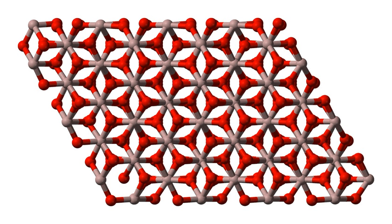Properties: Aluminium oxide is an electrical insulator but has a relatively high thermal conductivity for a ceramic material. It is insoluble in water. In its most commonly occurring crystalline form called corundum or alpha-aluminium oxide, its hardness makes it suitable as an abrasive and as a component in cutting tools. Aluminium oxide is responsible for the resistance of metallic aluminium to weathering, as a thin passivation layer of aluminium oxide forms on any exposed aluminium surface, protecting the metal from further oxidation.